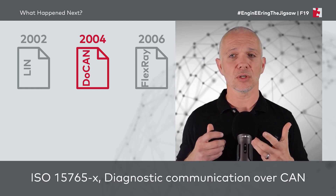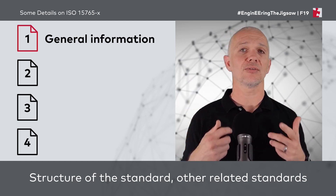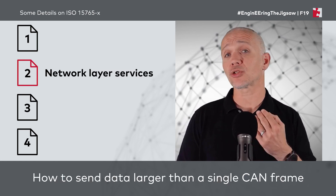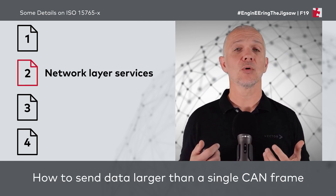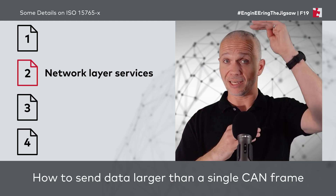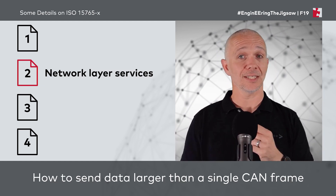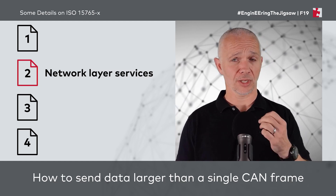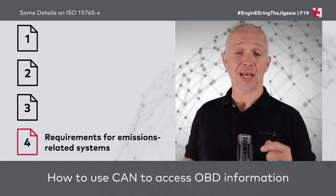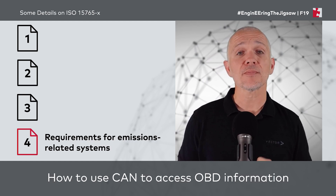Part one of ISO 15765 covers general information — structure of the standard, related standards, and vocabulary. Part two describes network layer services and a transport protocol — how we can send and receive data larger than fits into a single CAN frame. This sits roughly between the application protocol and the physical/data link layers in the OSI stack, and is used for diagnostic purposes. Part four, mentioned in episode F18, covers requirements for emissions-related systems, standardizing CAN identifiers used for OBD purposes.